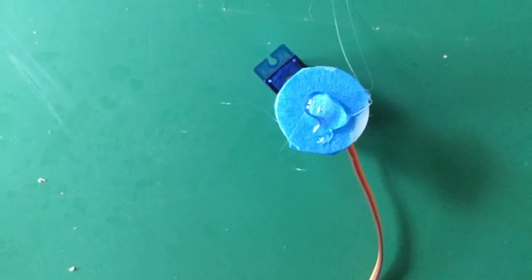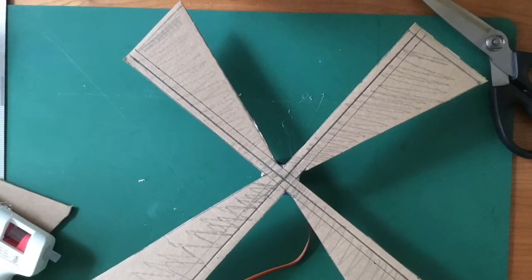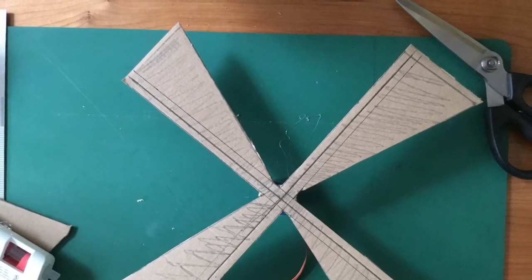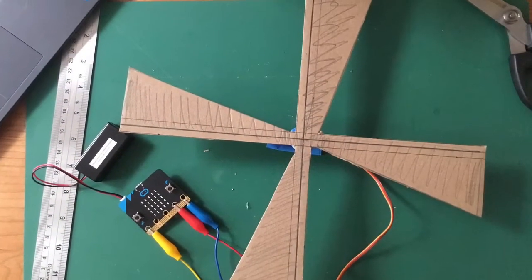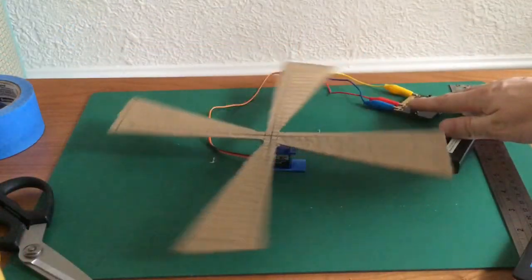I added a dab of hot glue to the top and then I glued my fan blades right down on top of it and then connected it to the micro bit and used a program to make it spin in a circle 360 degrees.